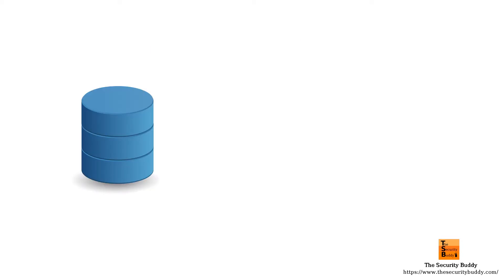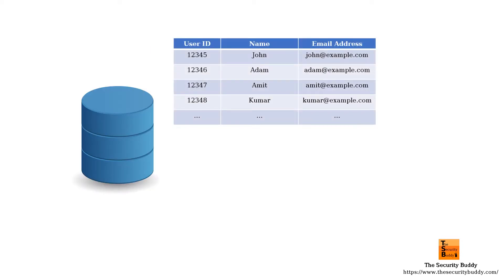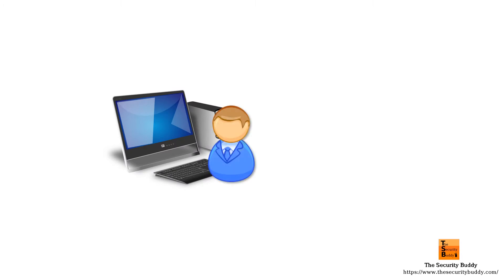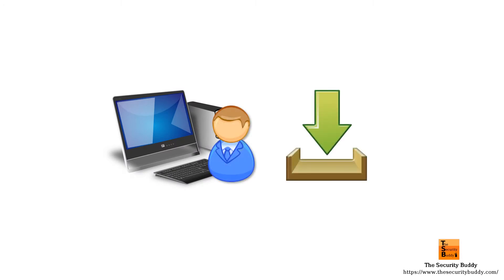For example, if a database user needs to view a table, he should not have the right to update or delete a table. Similarly, if a user's job is only to use a system for a particular purpose, then he should not have the right to install additional software on the system that requires administrative privileges.